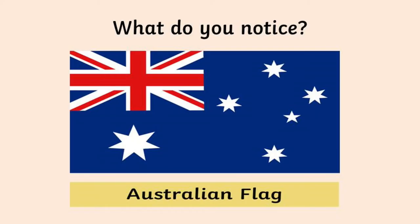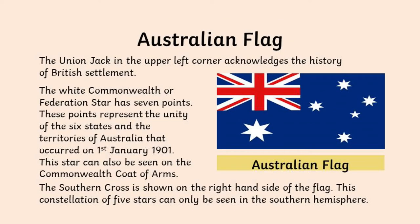This is the Australian flag. Take a close look at it. What do you notice? What can you spot? Can you see anything you recognise? Pause the video here and have a look at the flag. Some of you may have noticed the Union Jack in the upper left-hand corner.